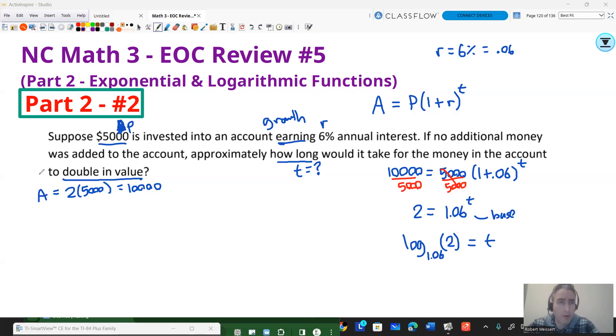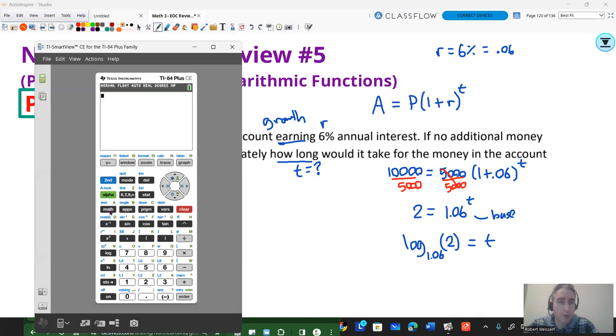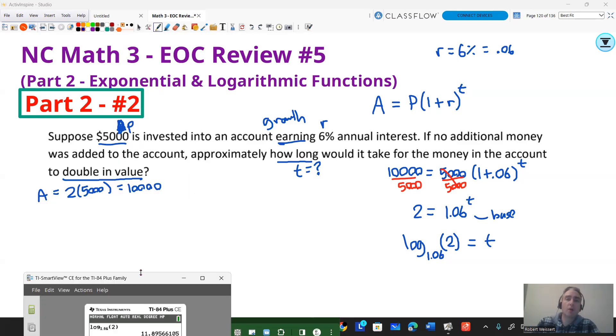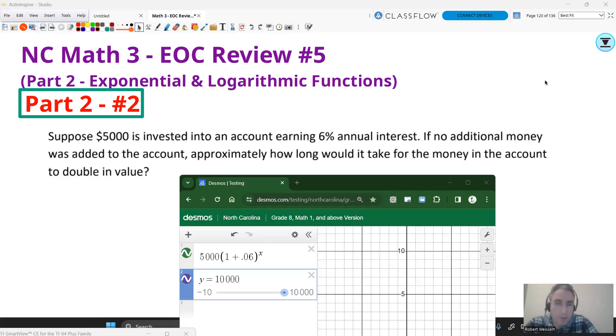And from there, it is calculator work. So whether you have your TI-84 or your Desmos, I'll go ahead and just do it in the 84. You can either do math, go to log base if you have that option, and you get about 11.89. Or if you don't have that option, just do log of 2 divided by log of 1.06. And I'll just round that to 11.9 years. So how long would it take the money in the account to double in value? About 11.9 years.